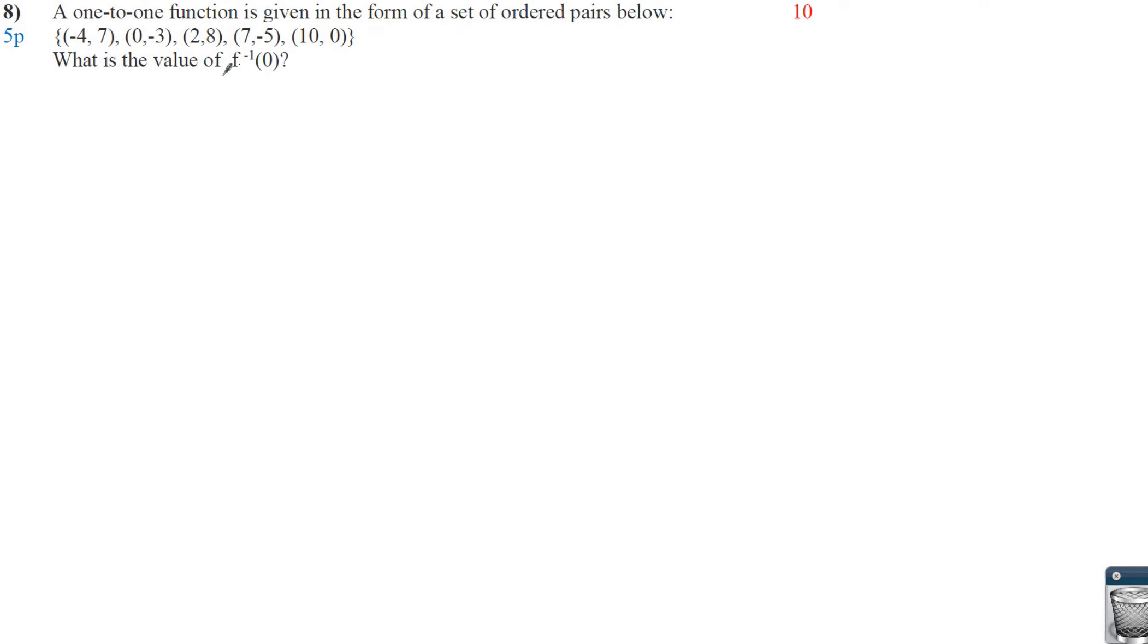Now here, this one's asking for the inverse. So the inverse function is where we literally switch all the x's and y's. So instead of negative 4, 7, it's now 7 comma negative 4. That's not the end. There's more points than that. And so then we have negative 3 comma 0, 8 comma 2, negative 5 comma 7, and 0 comma 10.